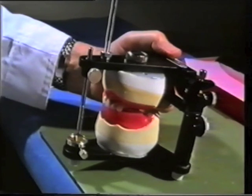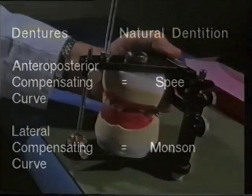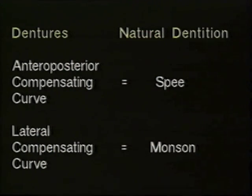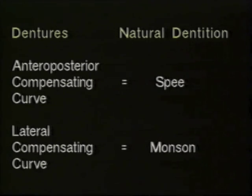The maxillary posterior teeth must be carefully positioned to maintain maximum occlusal contact with the lower teeth, not only in the intercuspal position, but also during lateral and protrusive functional movements. To achieve this objective, the teeth are arranged so that their cusps form a series of compensating curves. These curves consist of an antero-posterior compensating curve analogous to the curve of Spee observed in the natural dentition, and a lateral compensating curve or curve of Monson.